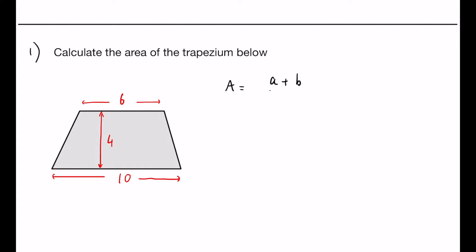So the area equals a plus b over 2 multiplied by the height. Now here we know a equals 6, b equals 10, and our height you can see is 4.